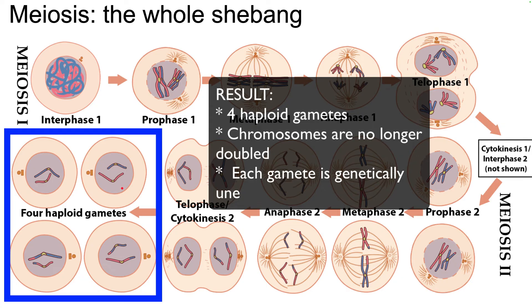The result: four haploid gametes, each consisting of single chromosomes. We've gone from diploid to haploid, from doubled chromosomes to single chromosomes, and each of these haploid gametes is unique — genetically unique. And that's what happens during meiosis.